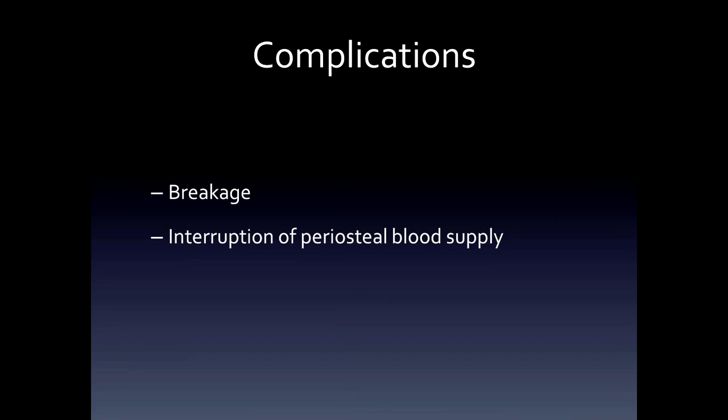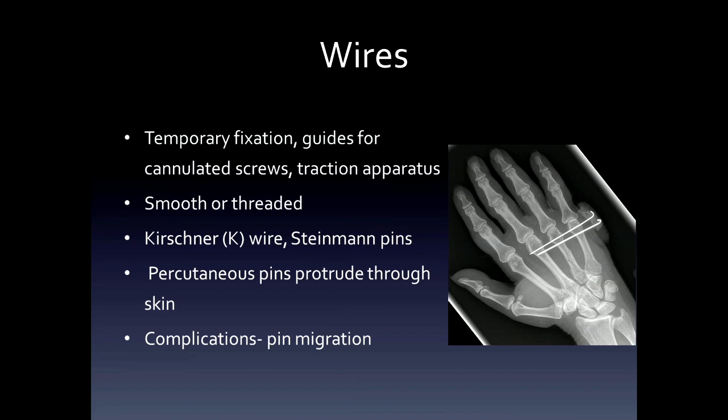Complications of wires include breakage, interruption of periosteal blood supply, and that would produce bone resorption under the wires. Wires are also used to temporarily fix fractures — these two K-wires are maintaining the length of the fourth metacarpal while that fracture heals. They're also used as guides for cannulated screws and for traction.